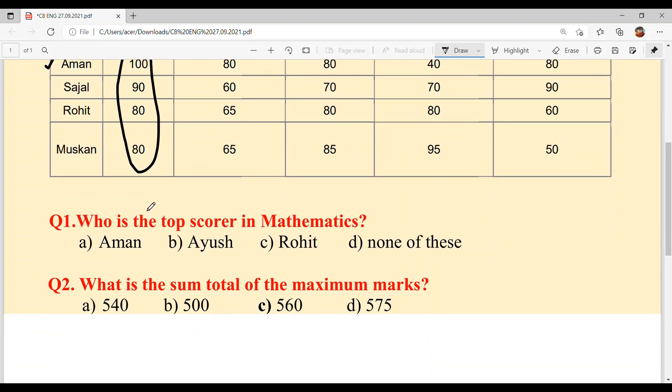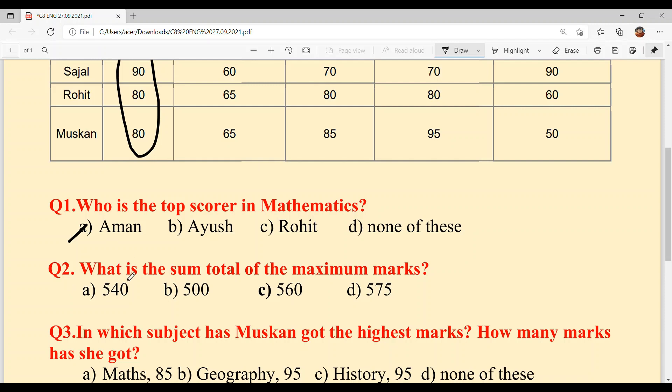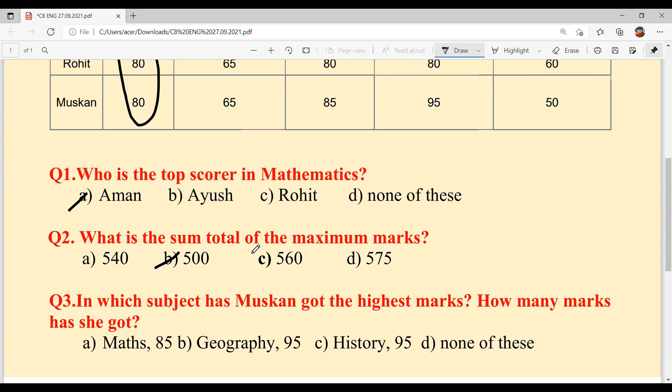Question number 2: What is the sum total of the maximum marks? We already discussed that each paper has 100 marks, so if there are 5 papers with 100 marks each, total marks will be 500. Option B, 500.